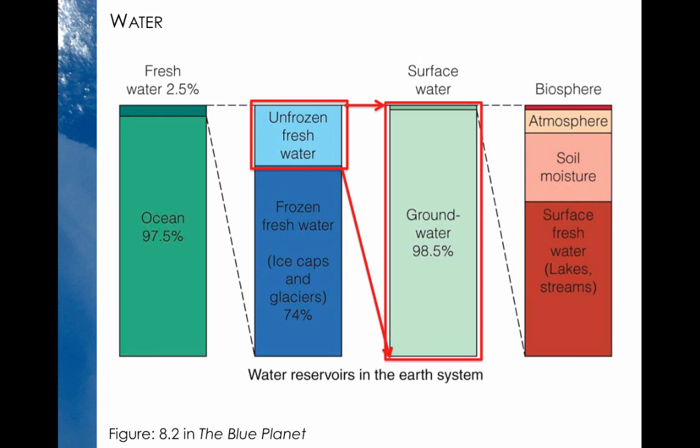26% of fresh water, or just 0.65% of all water on Earth, is unfrozen fresh water. Of this, 98.5% is groundwater, which means water that is found beneath the Earth's surface.